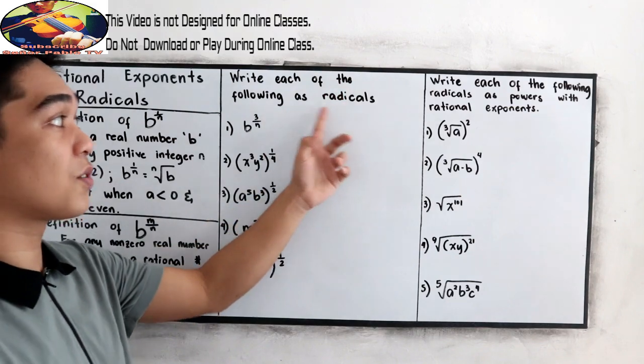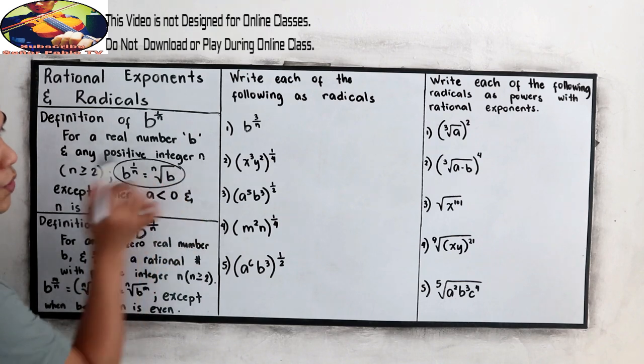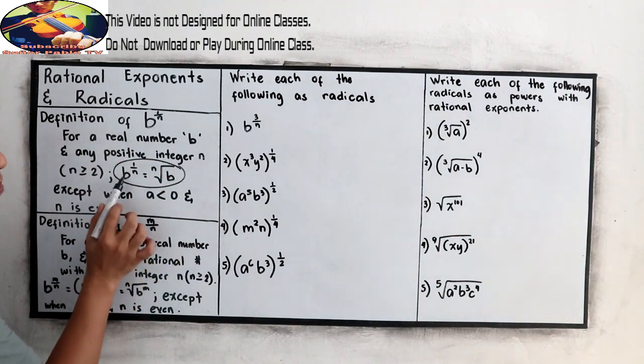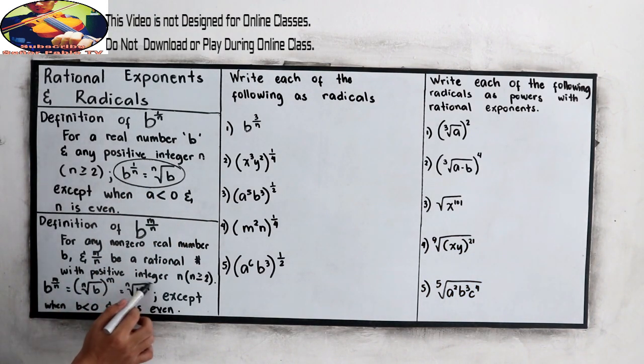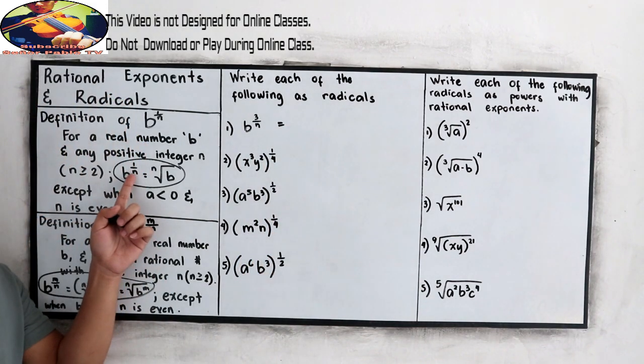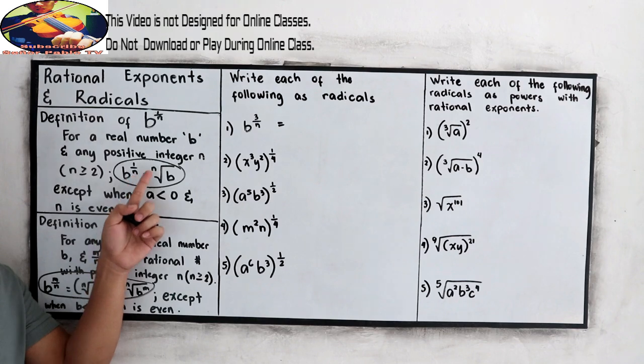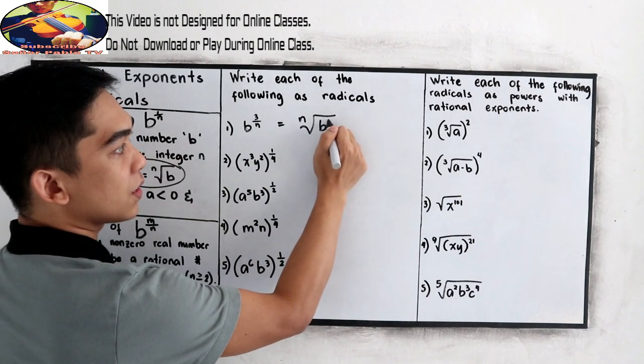Write each of the following as radicals. So we're going to use the following definition: B raised to 1 over N, that is equal to N root of B. And the other one is B raised to M over N, and that is equal to quantity N root of B raised to M, or N root of B raised to M. Notice that our denominator is the index.